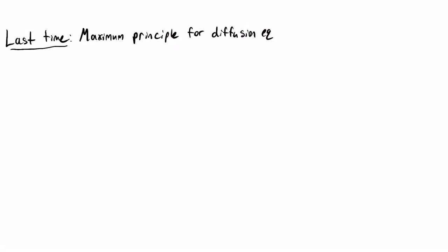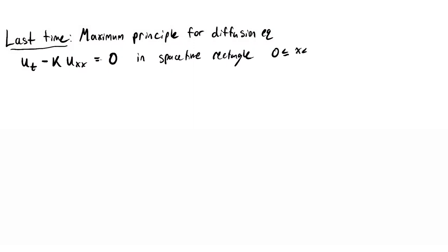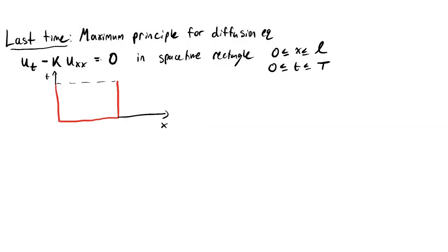What is the maximum principle for the diffusion equation? Suppose you have a function which solves the diffusion equation — that means U_T minus some constant K times U_XX is equal to zero — and suppose that this is in a spacetime rectangle. So X is between zero and some number L, and T is between zero and some capital T. Drawing the left, right, and lower boundaries in red and then the top: the maximum principle says that the maximum value of your solution is attained on one of the red lines.